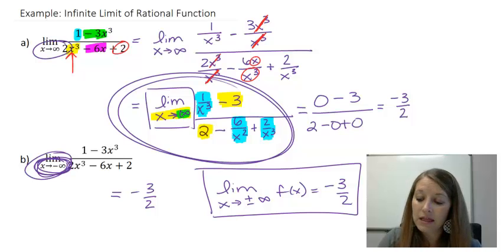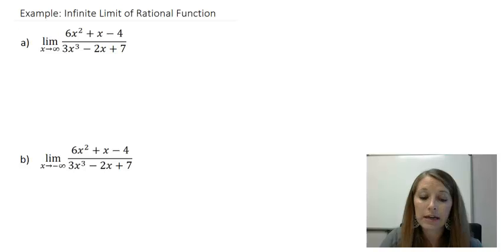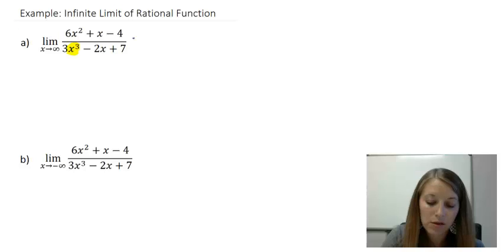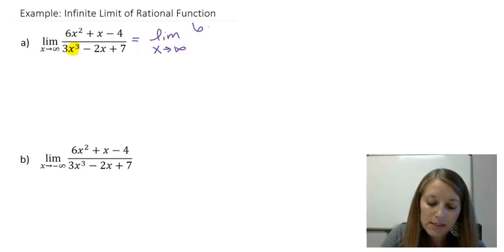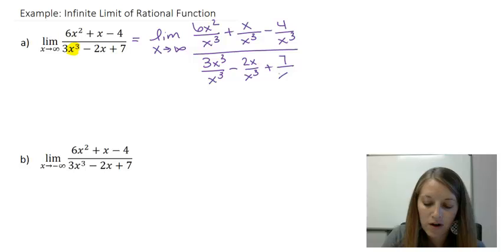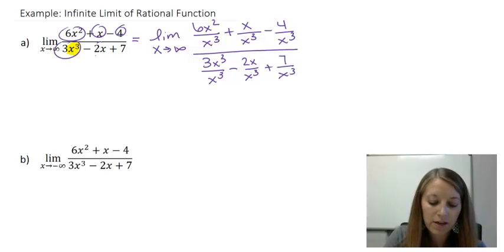Let me do one more example. I find my highest power of x in the denominator, which again happens to be x to the third — pure coincidence. I take every term and divide it by x³. So it becomes messy for a second, then simplifies: 6x² over x³, plus x over x³, minus 4 over x³ — all over 3x³ over x³, minus 2x over x³, plus 7 over x³. I just took each term individually and divided by the highest power of x in the denominator.